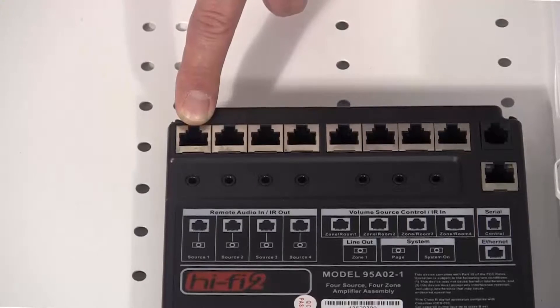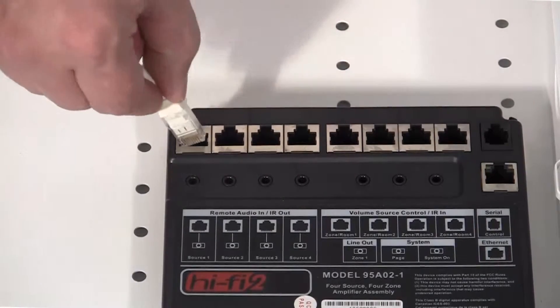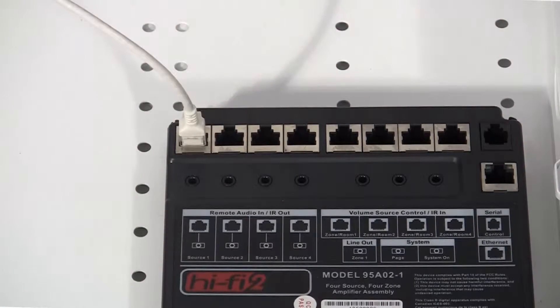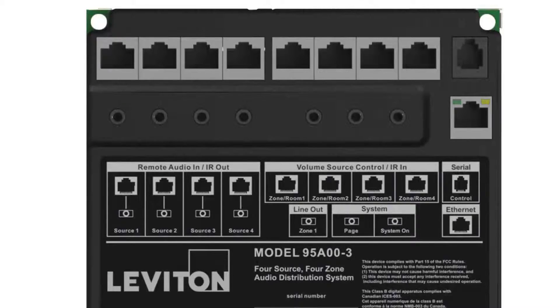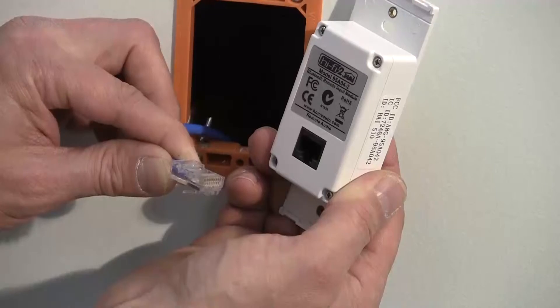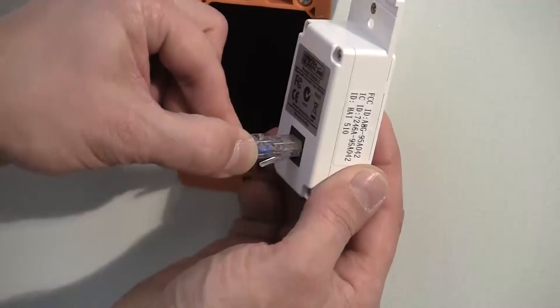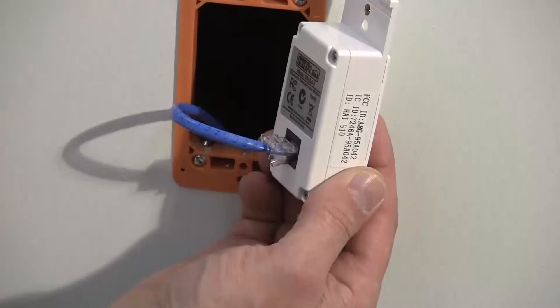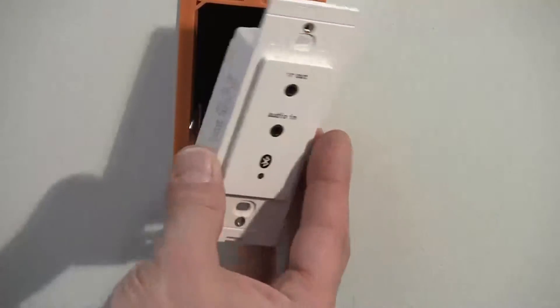Insert the RJ45 connector on one end of the cable to the respective source input jack one through four under remote audio in IR out on the Hi-Fi 2 main assembly. Insert the RJ45 connector on the other end of the cable to the jack labeled remote audio on the rim.